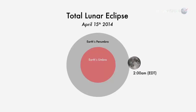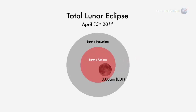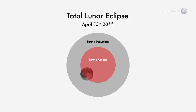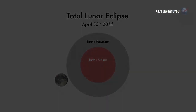The April 15th eclipse begins at 2 a.m. Eastern time, when the edge of the moon first enters the amber core of Earth's shadow. Totality occurs during a 78-minute interval, beginning around 3 o'clock in the morning on the east coast, midnight on the west coast. Weather permitting, the red moon will be easy to see across the entirety of North America.